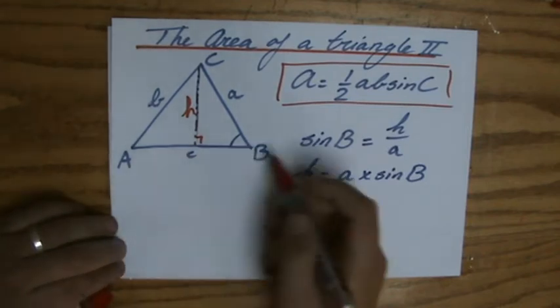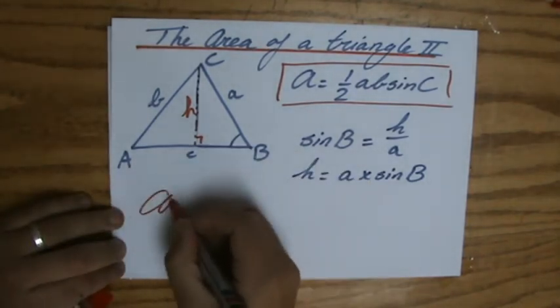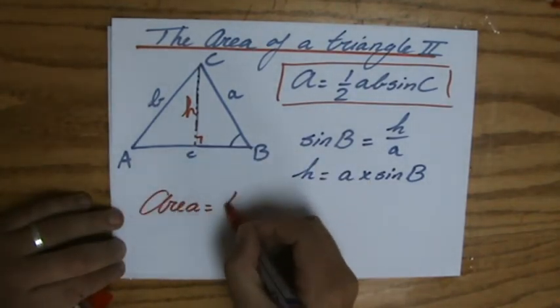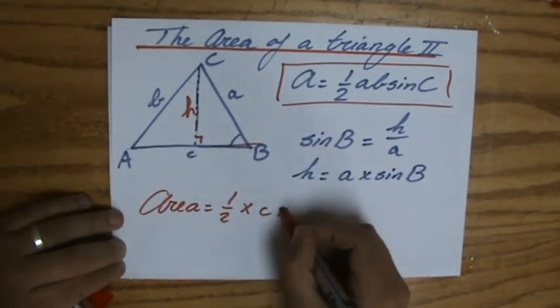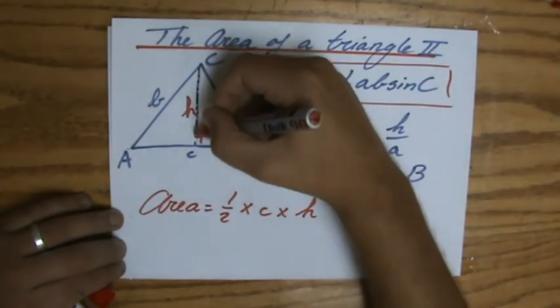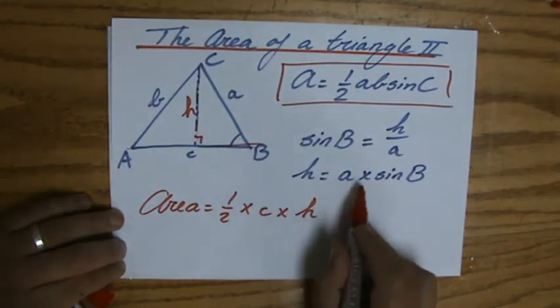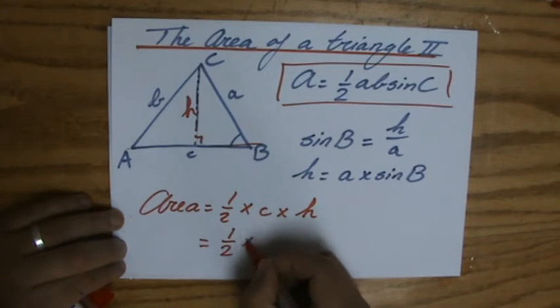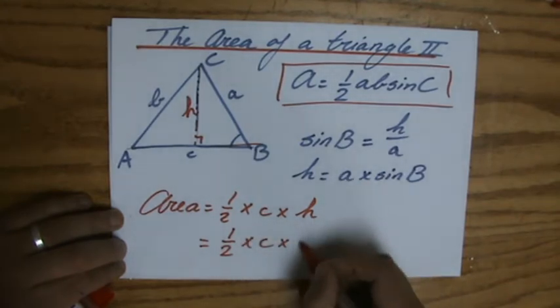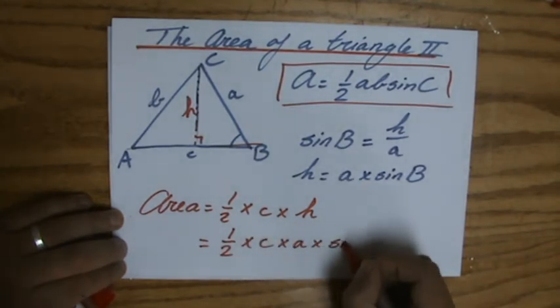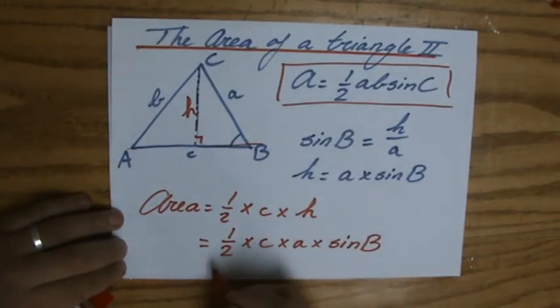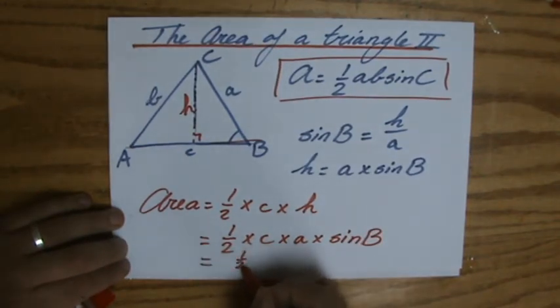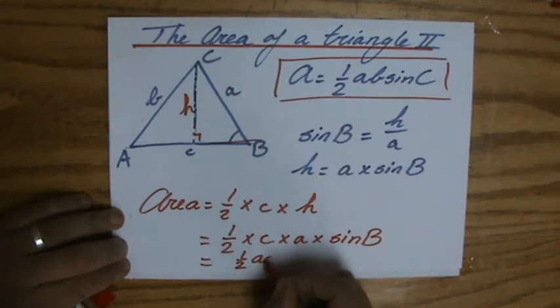And as we said before, if the area is a half times C times H, and now I say H is the same as A times the sine of B, that makes a half times C times A times the sine of B. And if I write it down a little bit nicer, a half A C sine of B.